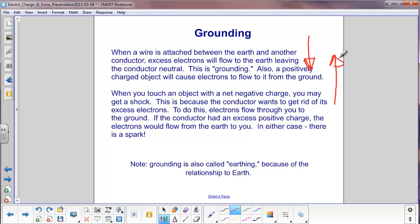So if you touch an object with a net negative charge, you may get a shock. This is because that conductor wants to get rid of its excess electrons. They will flow through you to the ground. If the conductor had an excess positive charge, the electrons would flow the opposite way, from the earth through you to the conductor. In either case, there is a spark. You can notice this during the winter, especially when the air is pretty dry.